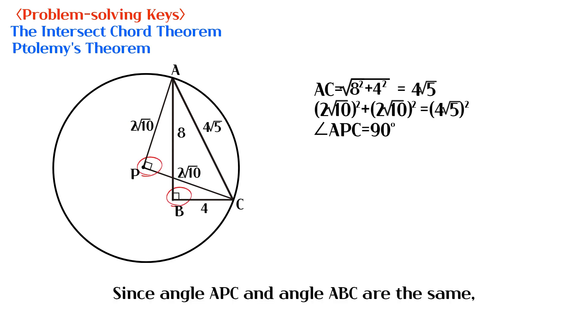Since angle APC and angle ABC are the same, 4 points A, P, B and C are concyclic.